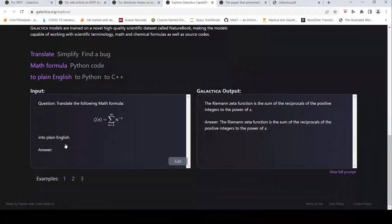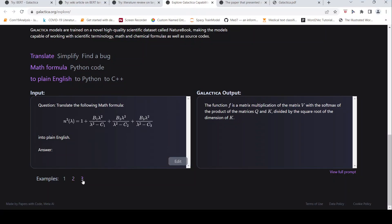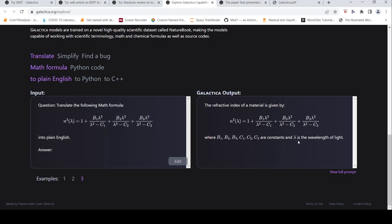You can also do some things like translate the following math formula into plain English. And this is the answer which comes out of it, the Riemann zeta function. Or something like this translate the following math formula into plain English. So it says function F is a matrix multiplication of the matrix V with softmax of the product of matrices Q and K divided by the square root of the dimension K. So this is quite accurate. And then you have translate the following math formula into simple plain English and it says where B1, B2, B3, C1, C2, C3 are constants and lambda is the wavelength of light. The refractive index of a material is given by this formula. So this is quite nice.